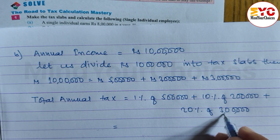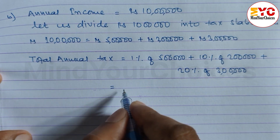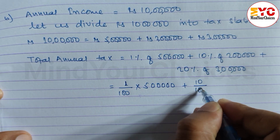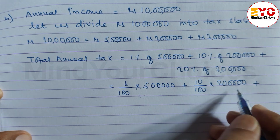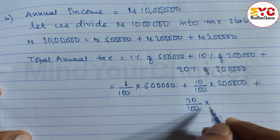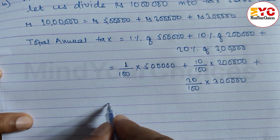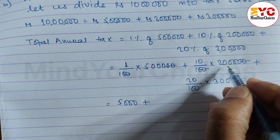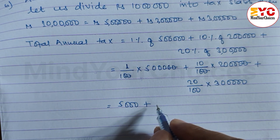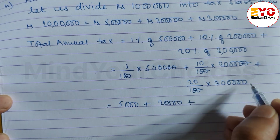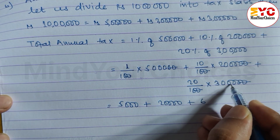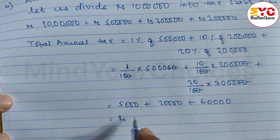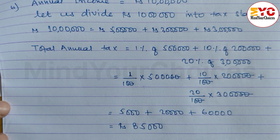Total annual tax = 1% of 5 lakhs + 10% of 2 lakhs + 20% of 3 lakhs = (1/100 × 5,00,000) + (10/100 × 2,00,000) + (20/100 × 3,00,000) = 5,000 + 20,000 + 60,000 = 85,000 rupees.